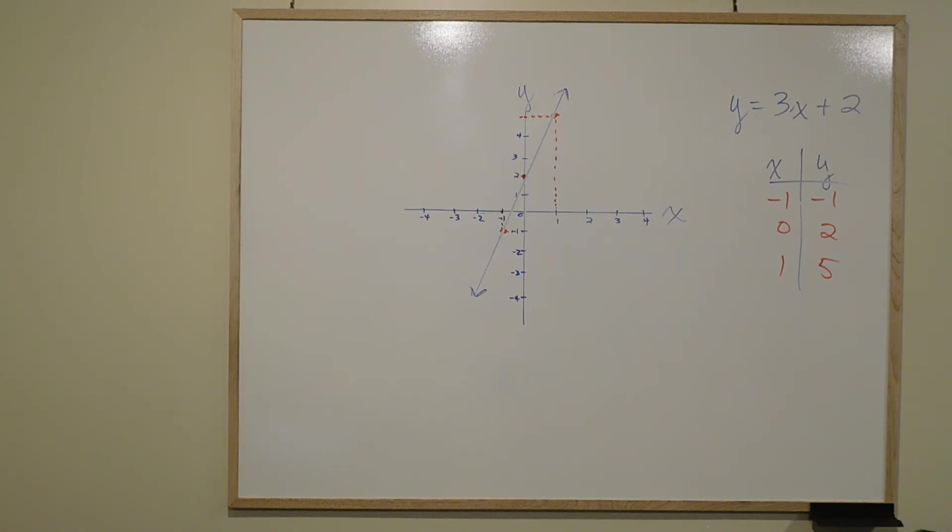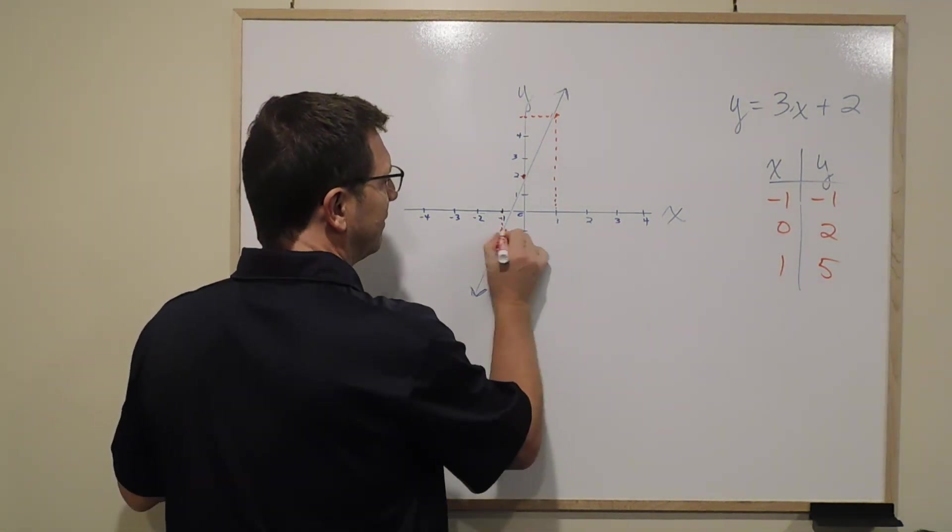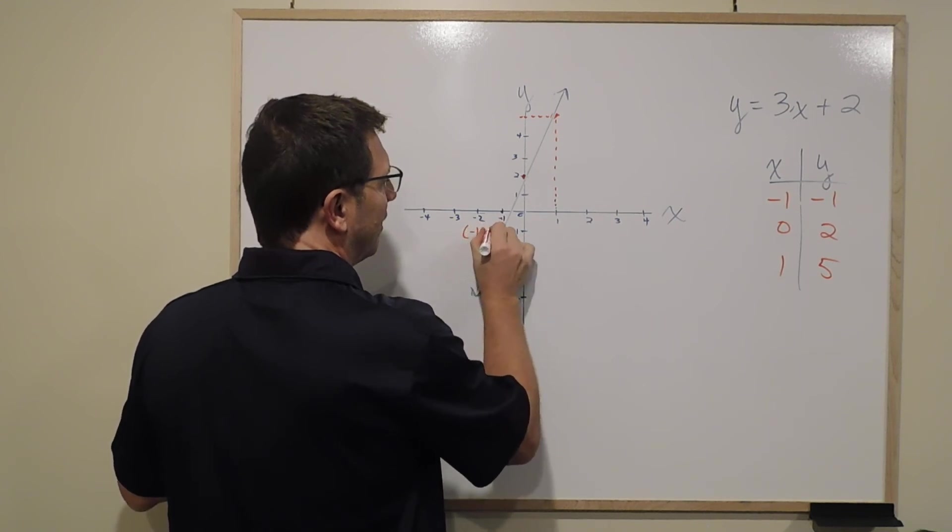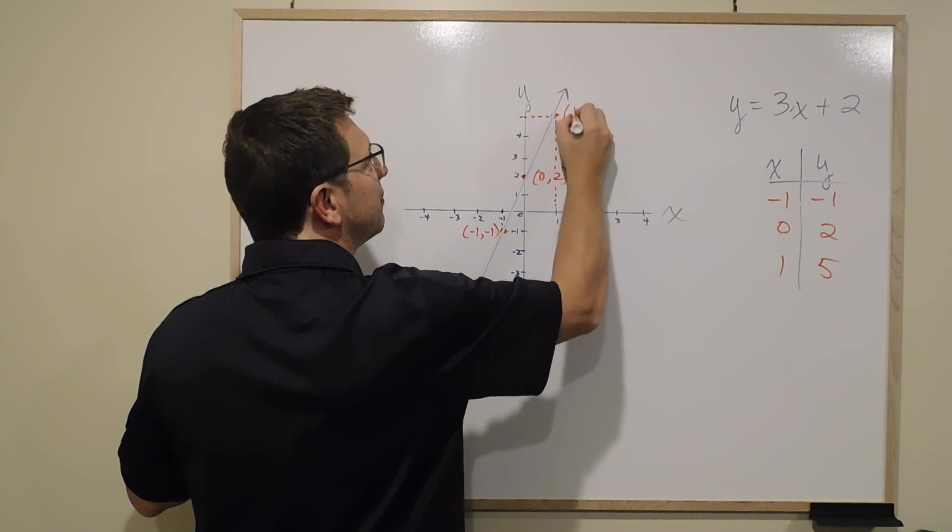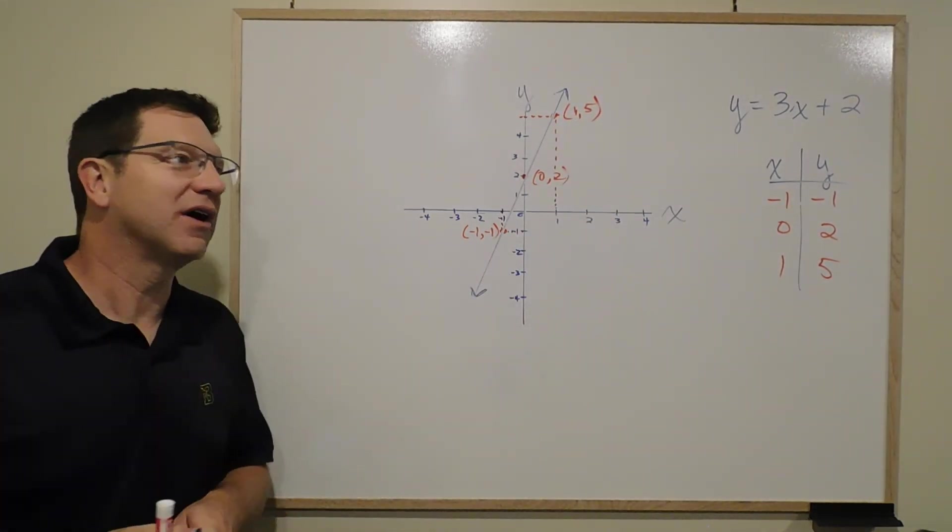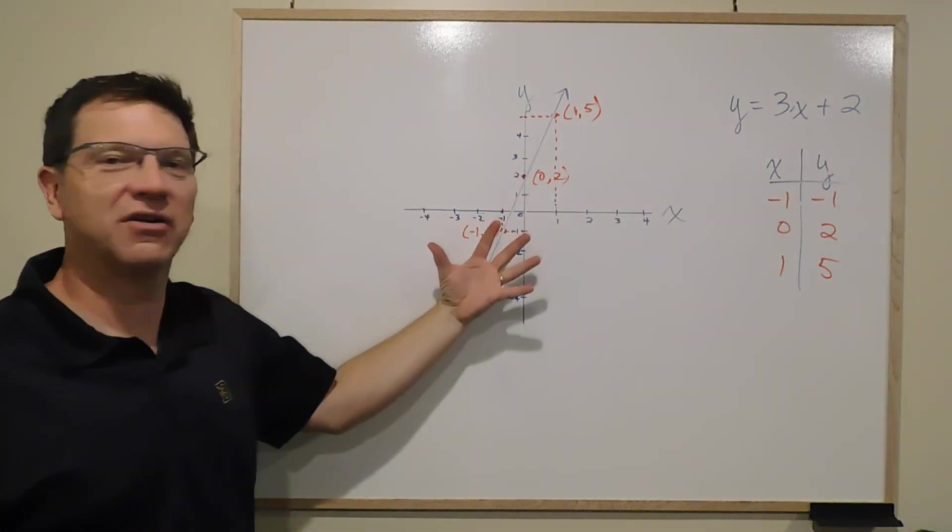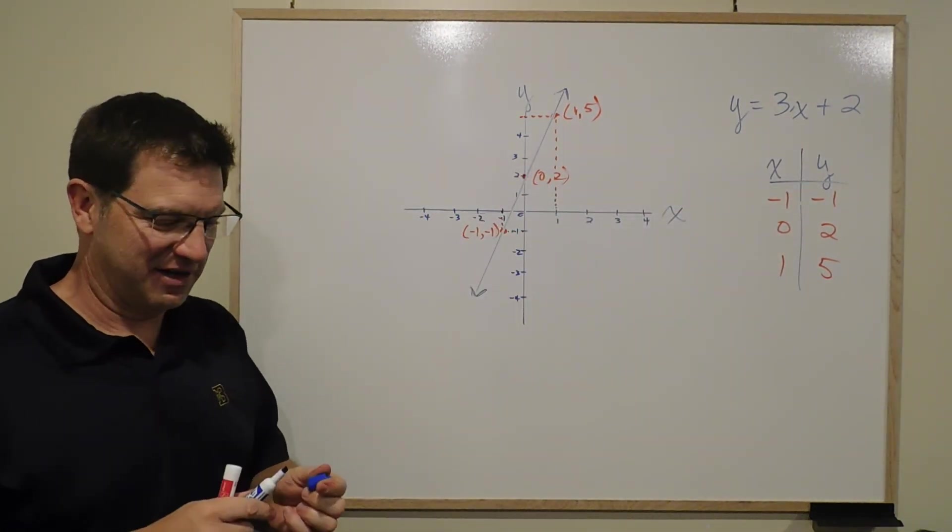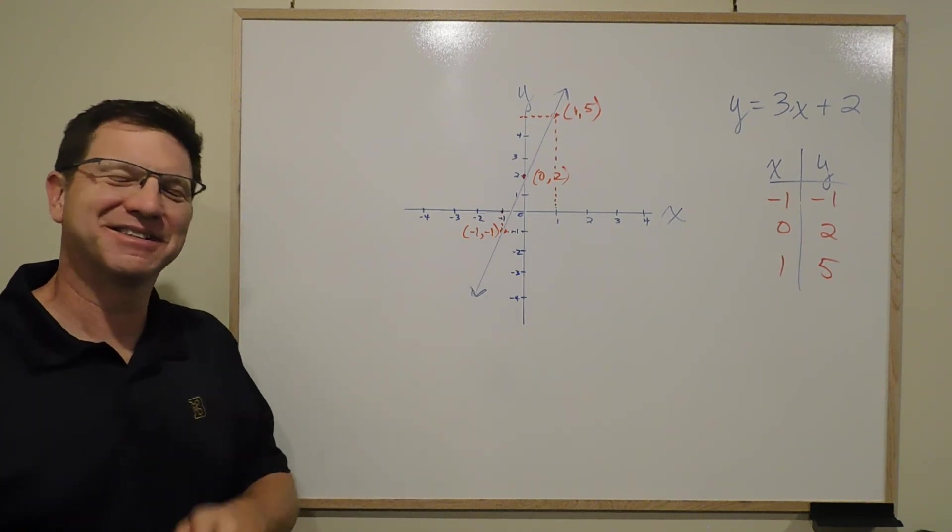The one last thing you would do, if completing this by hand, is actually state the points: this is (-1, -1), this is (0, 2), and this is (1, 5). So what you've done is taken an equation and turned it into a picture of a graph. You'll see more on the slides as we go, but that's a full layout for you. See you next slide.